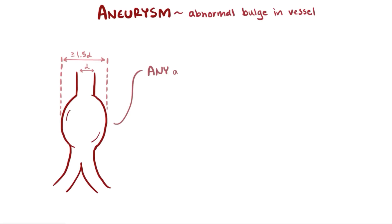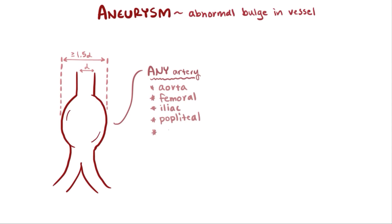Aneurysms can happen to any blood vessel in your body, like the aorta, the femoral artery, the iliac artery, the popliteal artery, and the cerebral arteries. They can also happen in your veins too, but those are less common because blood pressure in veins is much, much lower than in arteries.